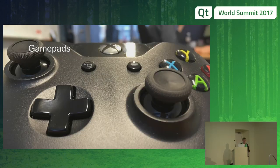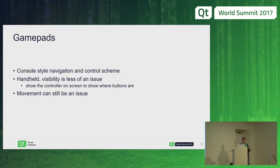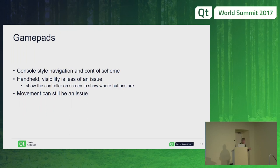Gamepads are the traditional console-style input method. When I got my Oculus Rift, I got an Xbox gamepad with it. This is slightly better than mouse and keyboard because it's already in your hands and there are only a few buttons to search for. You can show the gamepad on screen to indicate which button to press. FPS-style controls with the thumbstick are still a concern — you should avoid turning with the thumbstick to prevent motion sickness.